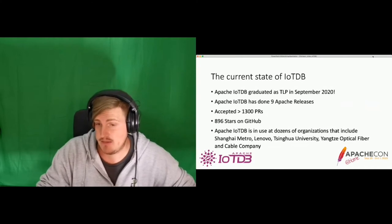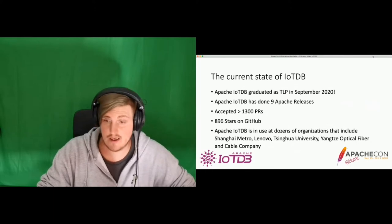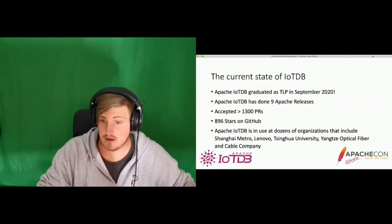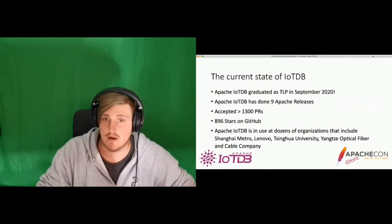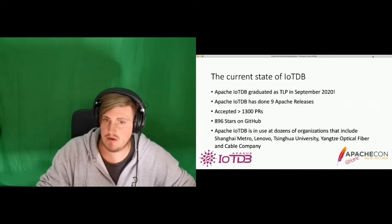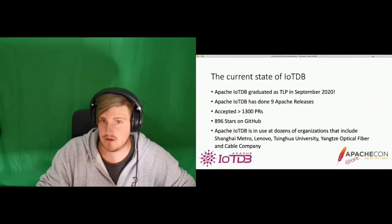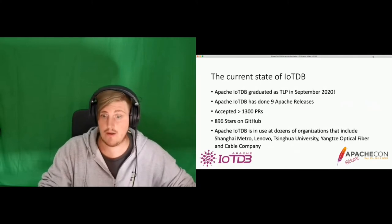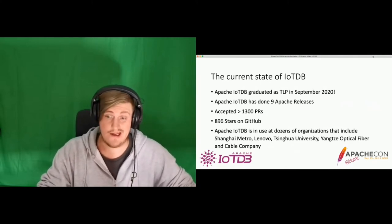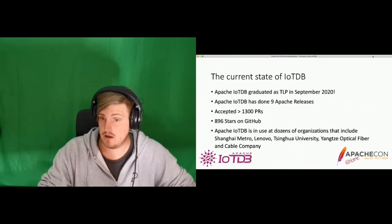Apache IoTDB has done nine Apache releases with five release managers overall, which is a nice range — not only one guy being able to do this, but five people. Tons of PRs, and it's really getting some traction with about 900 stars on GitHub. There are many widely known companies like Shanghai Metro or Lenovo which already use the software. Apache IoTDB made it out of Incubator in less than two years, which is pretty good.